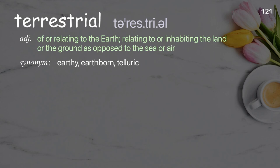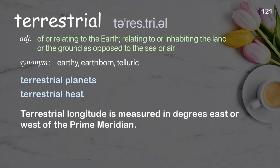Terrestrial. Of or relating to the earth; relating to or inhabiting the land or the ground as opposed to the sea or air. Examples: terrestrial planets, terrestrial heat. Terrestrial longitude is measured in degrees east or west of the prime meridian.